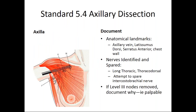Standard 5.4 discusses axillary dissection. We need to document the anatomic landmarks for the dissection, which include the axillary vein, latissimus dorsi, serratus anterior, and the chest wall. We should identify and spare the long thoracic and thoracodorsal nerves and attempt to spare the intercostal brachial nerve. On occasion, level 3 lymph nodes may need to be removed, and we need to document why.